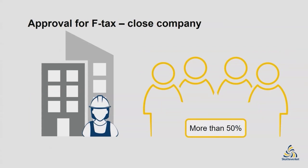If you have a close company, you must also show that the partners do not have debts related to taxes or social security contributions. In order to do so, you have to send documents with your F-tax application confirming that you have no debts. A close company is a company where a maximum of four partners own more than half of the total voting shares.